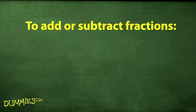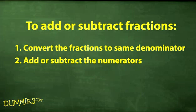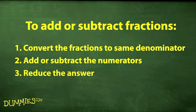To add or subtract fractions, first convert the fractions so that they have the same number in the denominators, or the numbers on bottom. Second, add or subtract the numerators, or the numbers on top. Leave the denominators alone. And third, reduce the answer if needed.